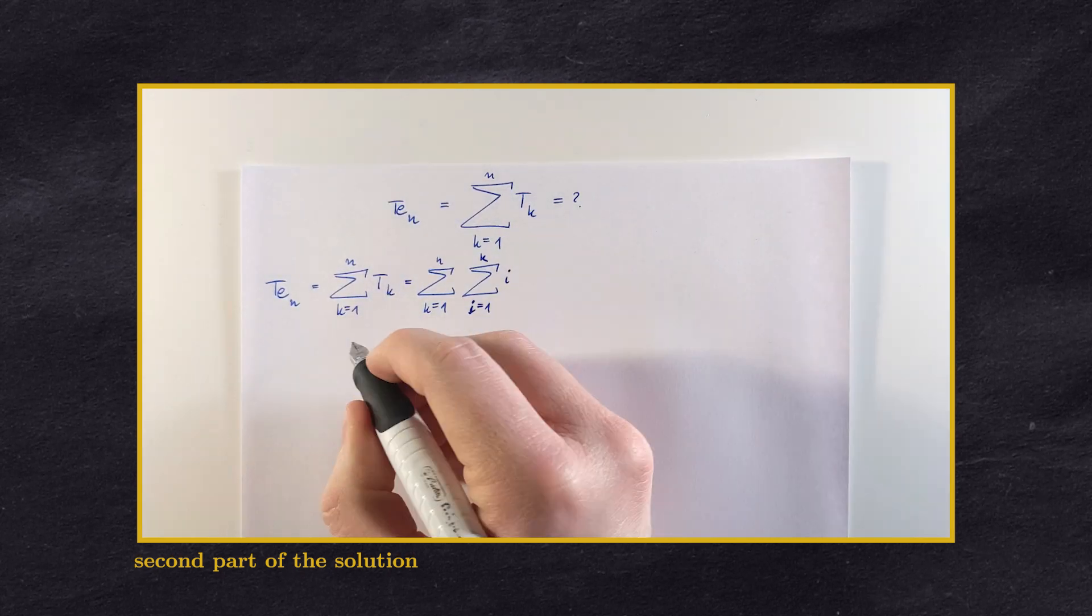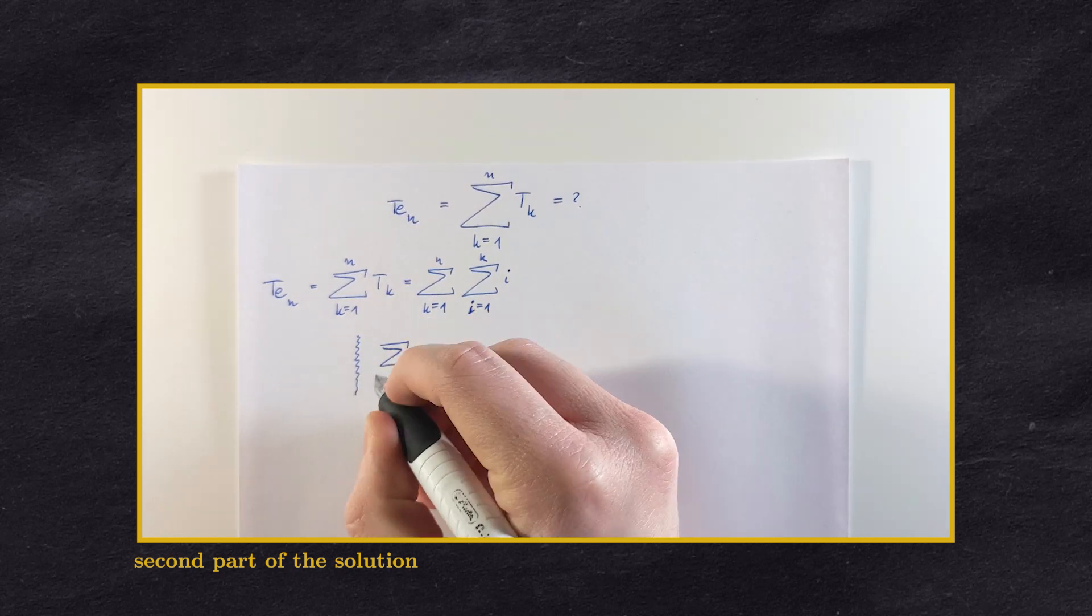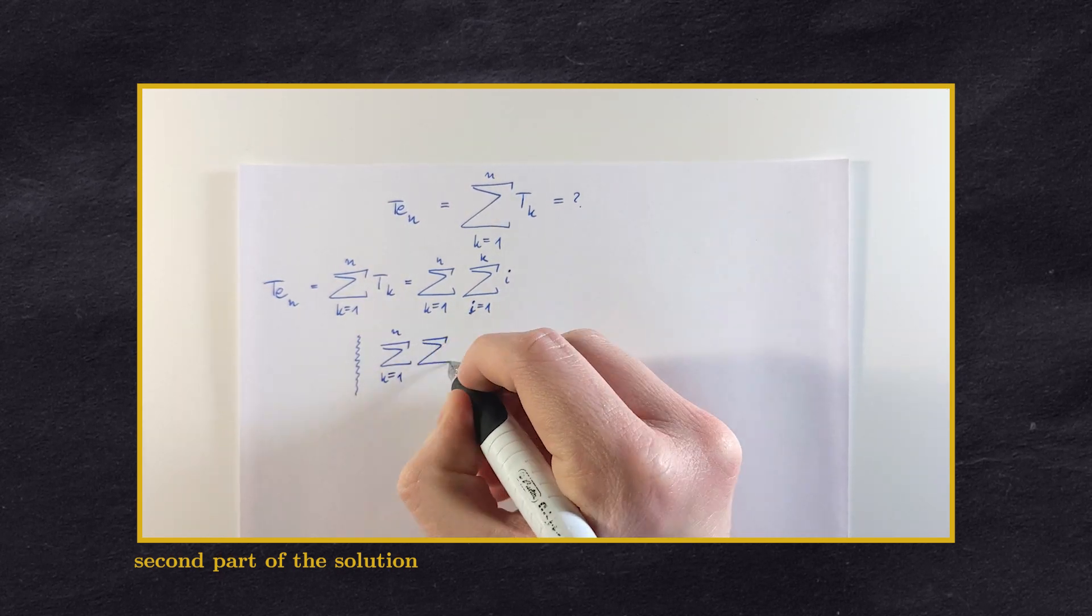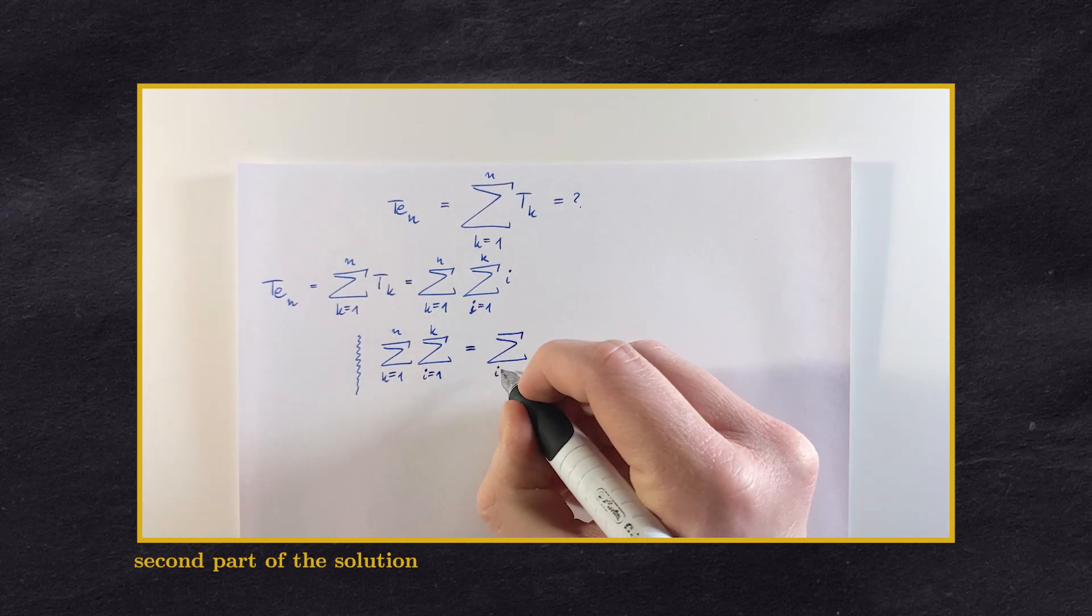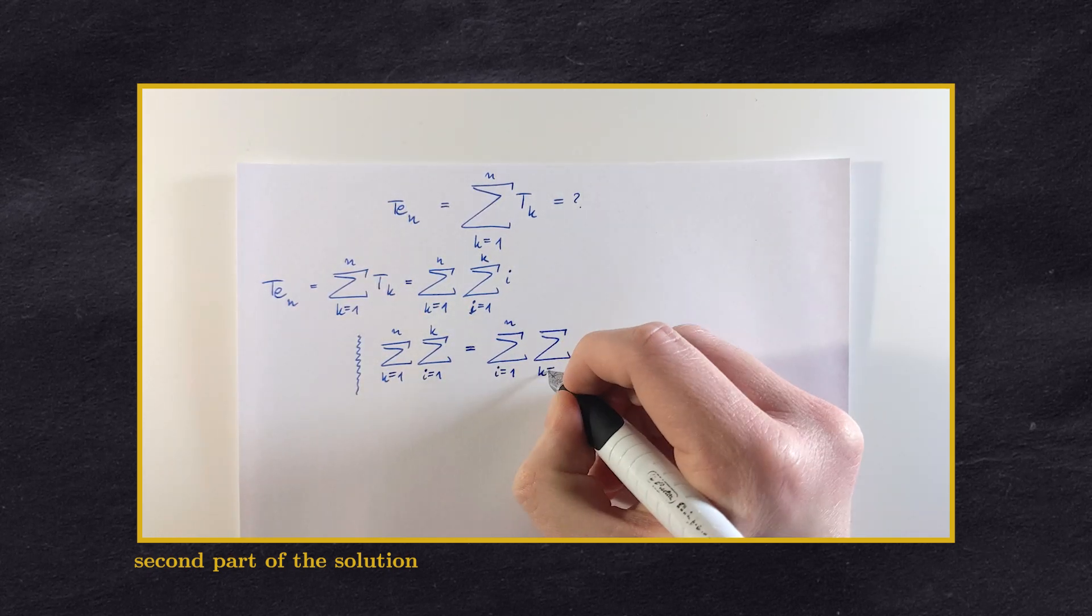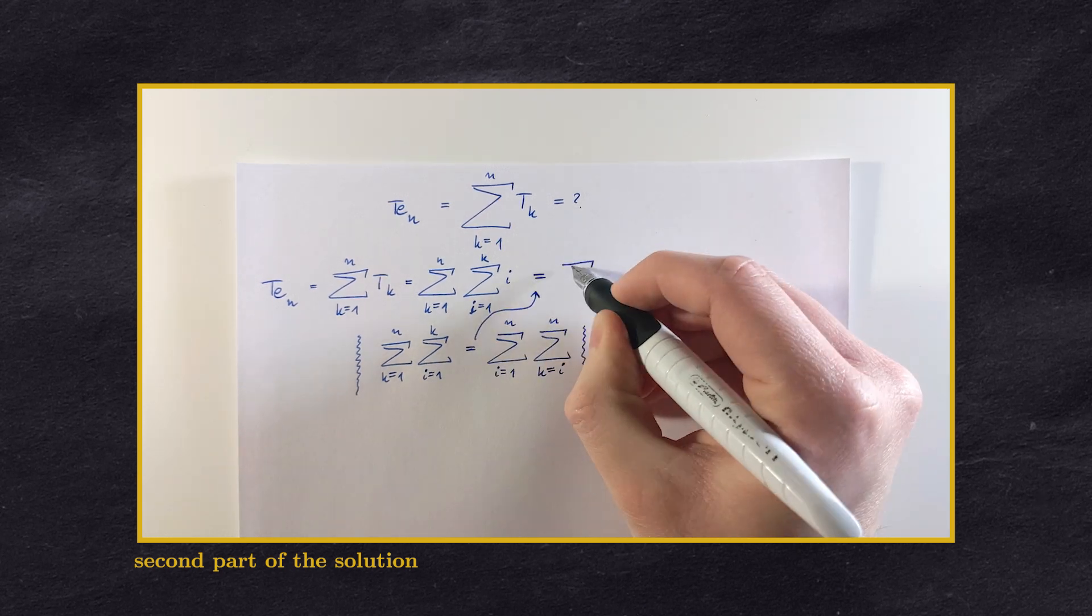As you could have noticed, the trick didn't depend on what we were summing, only on the intervals we were summing over. So we can use the same double sum equality without repeating the whole drawing process.